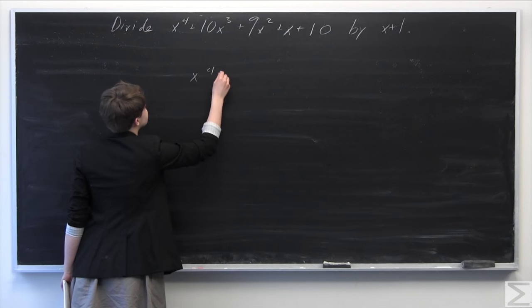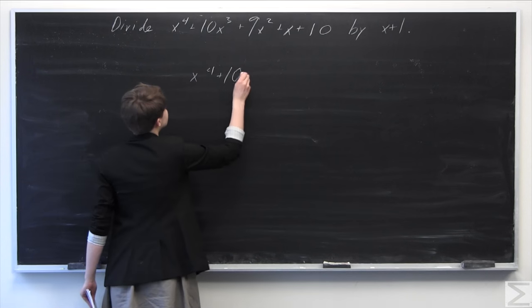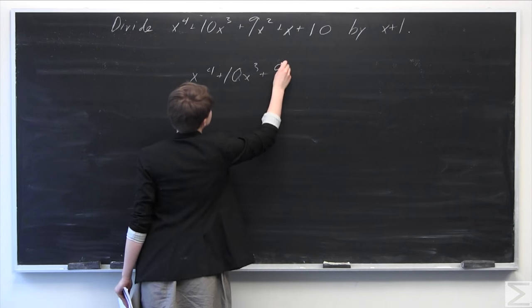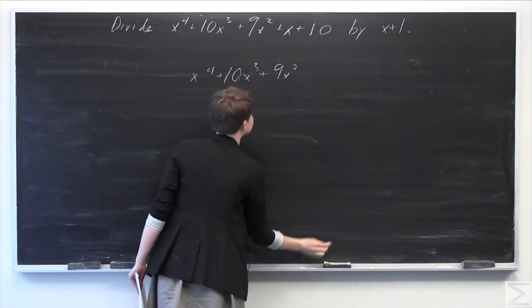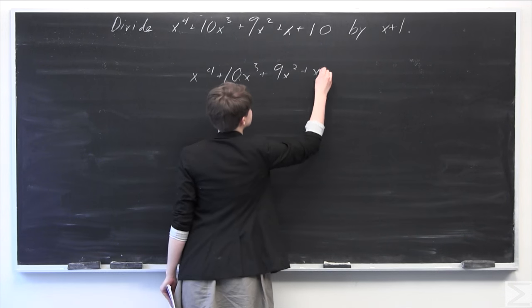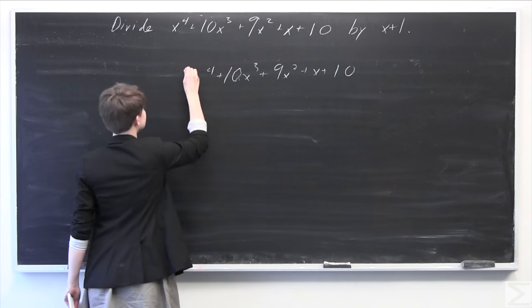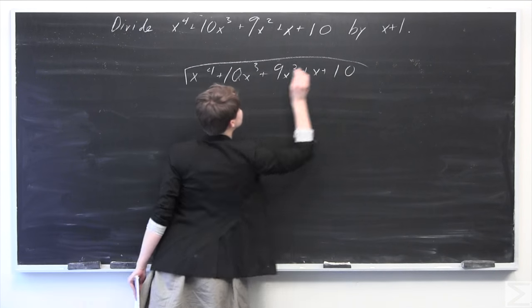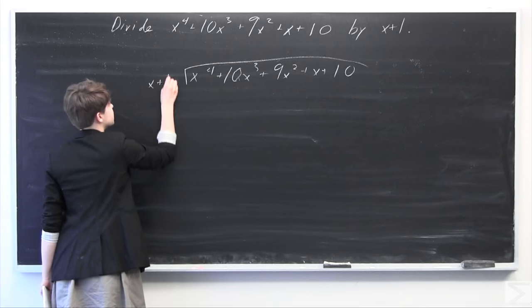I'm going to start by writing x to the fourth, just copying this polynomial here, plus 10x cubed plus 9x squared plus x plus 10. And over here, we're going to divide all by x plus 1.